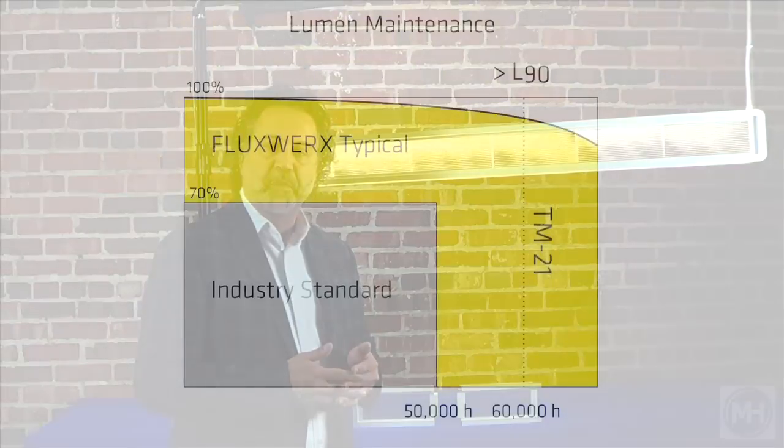LEDs have also been tested for 10,000 hours, which means that after 60,000 hours, according to TM21 guidelines, we'll be able to deliver L90 or just a ten percent depreciation and light output after the first 60,000 hours of operation.